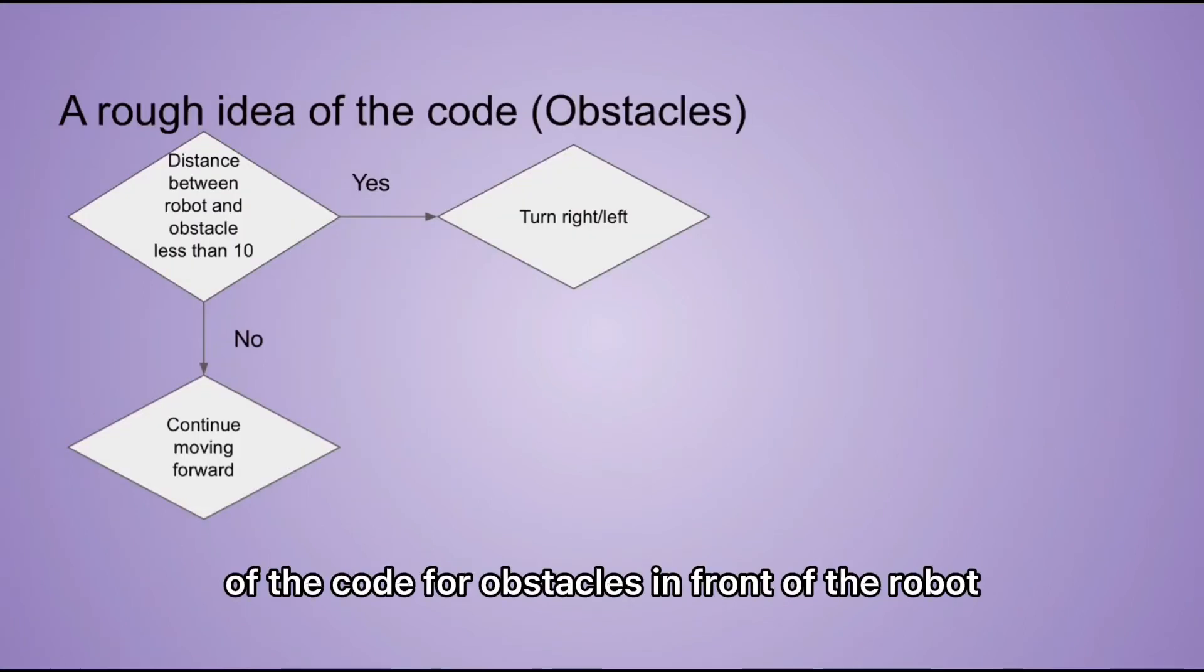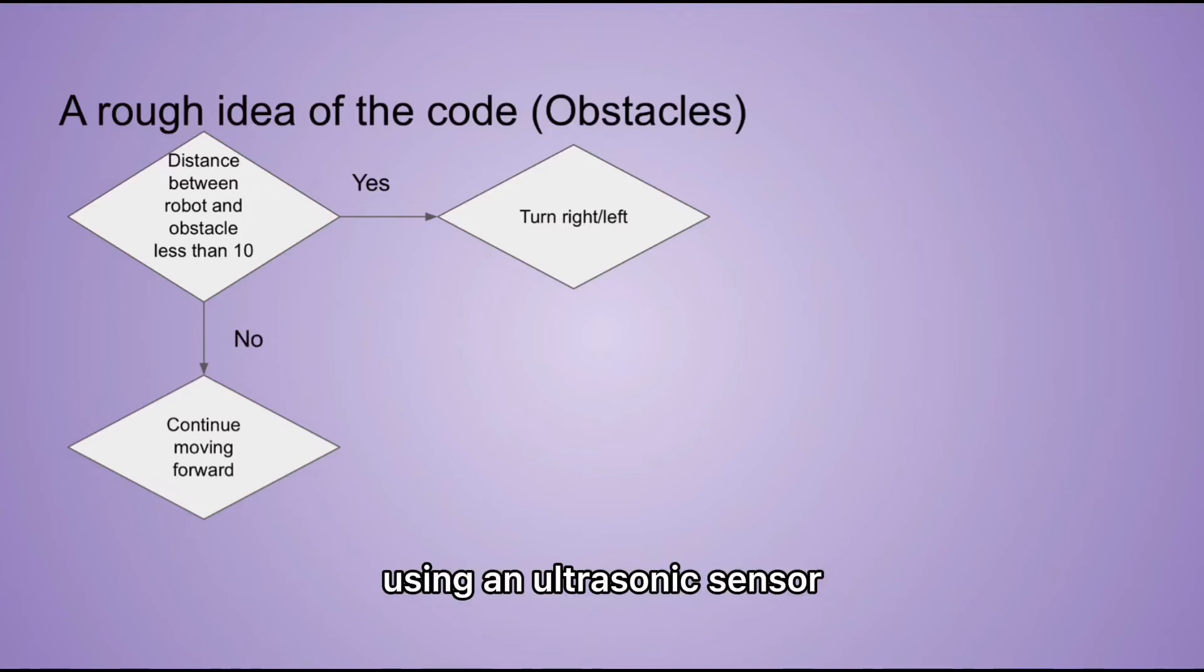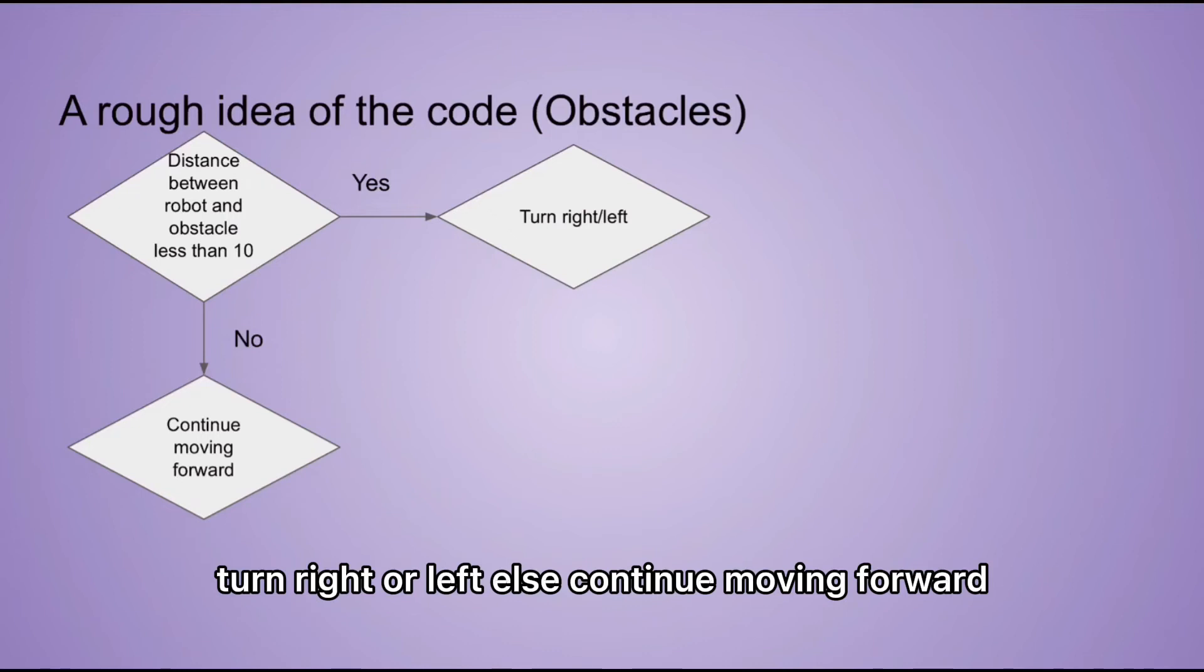This is a rough idea of the code for obstacles in front of the robot using an ultrasonic sensor. If the distance between the robot and an obstacle is less than 10, turn right or left, else continue moving forward.